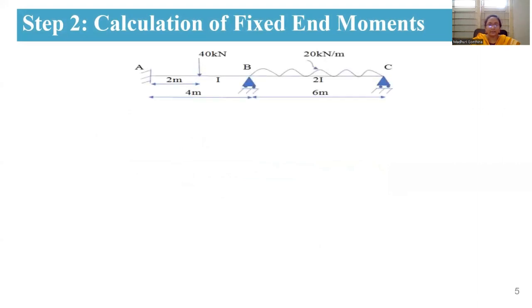The next step is to find the fixed end moments. We consider each individual span — AB and BC — and assume supports B and C to also be fixed supports temporarily. For each span individually, we will calculate the fixed end moments.